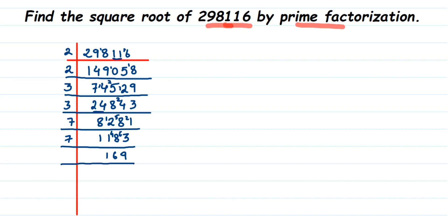We got 169. Now 169 is a square of 13 — 13 into 13 is 169. After 7, the next prime number is 11, but 169 doesn't appear in the 11 times table. The next prime number is 13. Dividing 169 by 13: 13 ones are 13, 3 is the remainder, we get 39. 13 threes are 39. Then 13 ones are 13. So we've found all the prime factors.